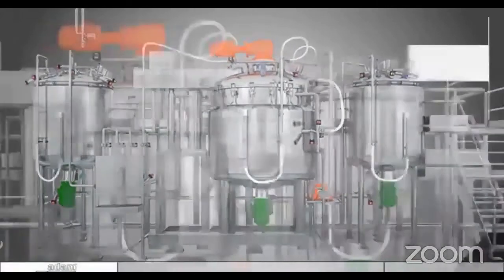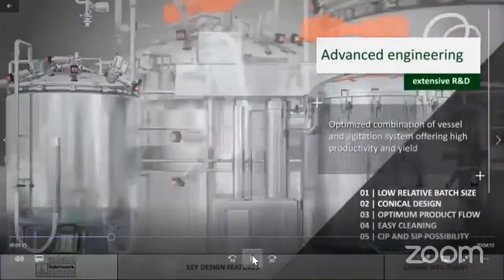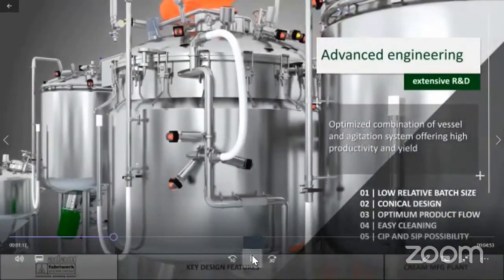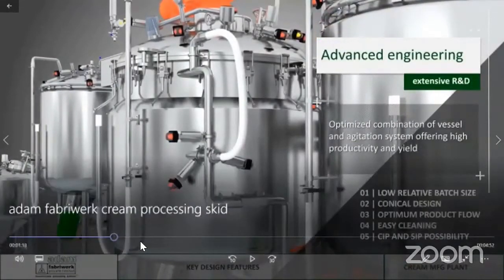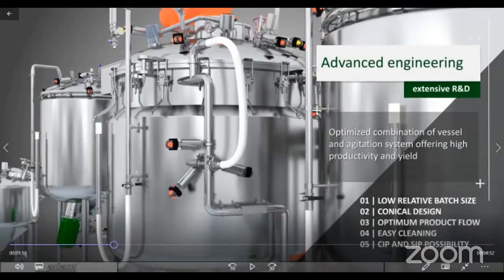CIP also is part of the system. The conical design of the bottom of the manufacturing vessel ensures lower batch sizes are possible within the manufacturing vessel. It's also ease of cleaning and ensures high degree of CIP ability and SIP ability for specific operations.